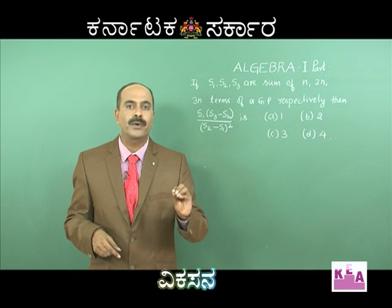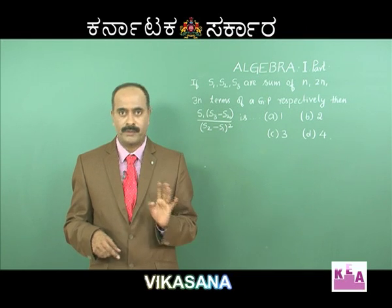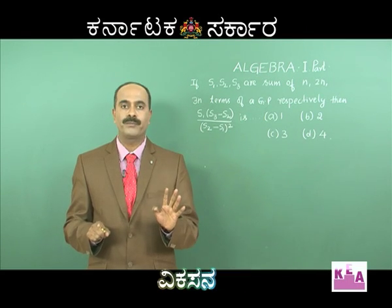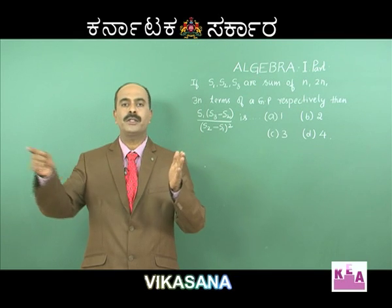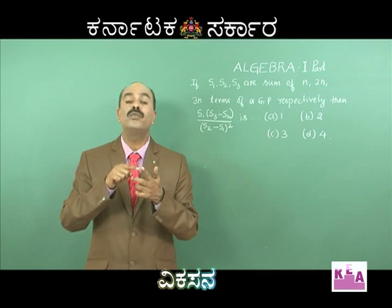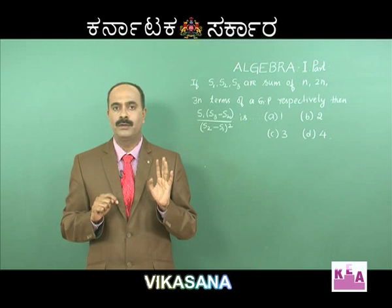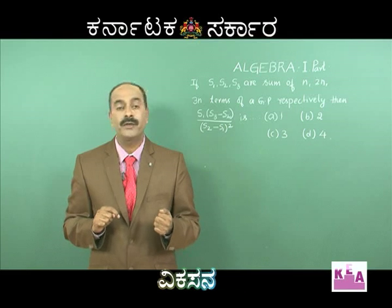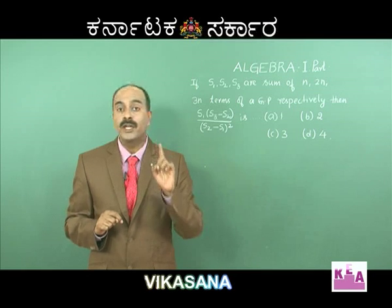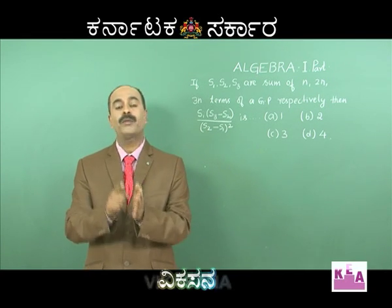Understand a standard geometric progression. The standard arithmetic progression is 1, 2, 3, 4, 5, 6, 7, 8, 9, 10 — first term is 1, common difference is 1. The simplest geometric progression is 1, 2, 4, 8, 16 — first term is 1, common ratio is 2. The simplest harmonic progression is 3, 4, 6 — this is the simplest harmonic sequence.